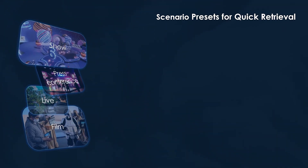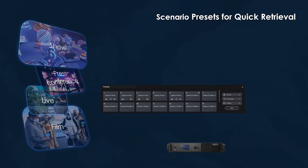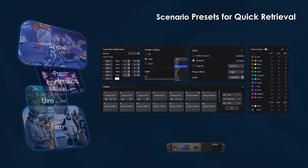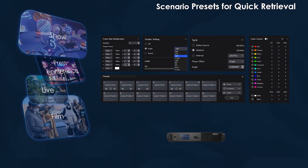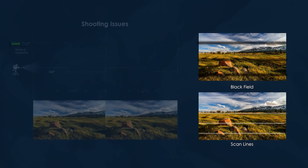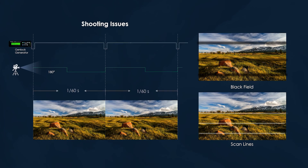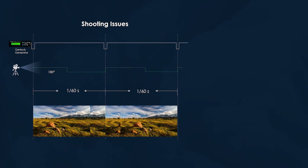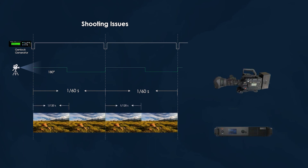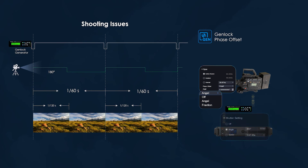These presets allow the user to set parameters that are unique to the demands of a live or studio broadcast, or a conference or trade show, or almost any other application. Novastar's VMP provides Genlock phase offset and shutter fit to counter black field and scan lines, which can occur when the camera's shutter and content have inconsistent start times, duration or frequency.